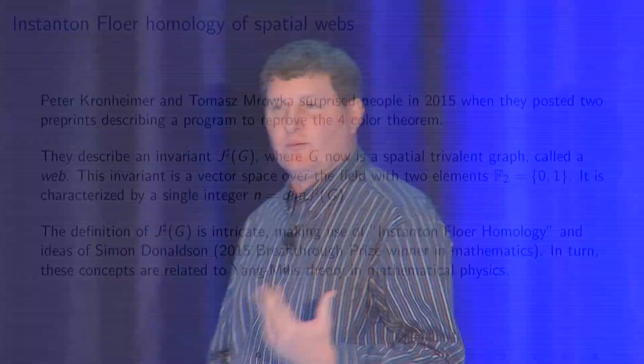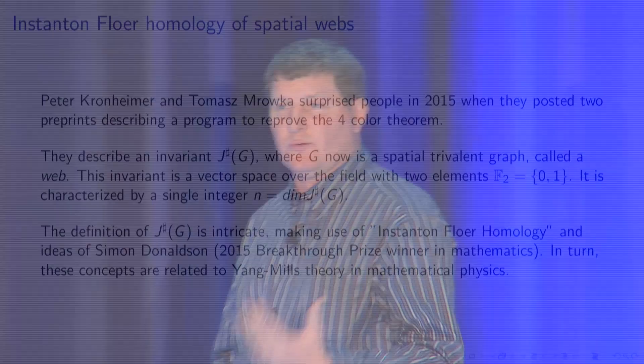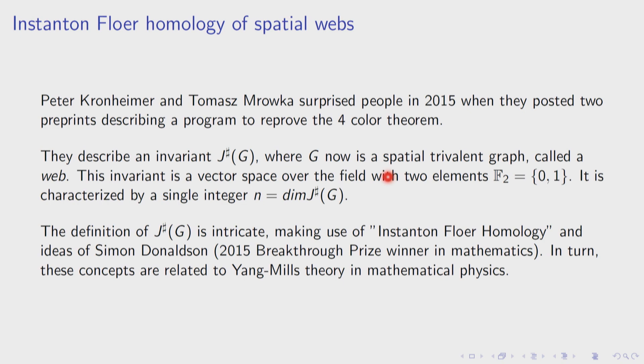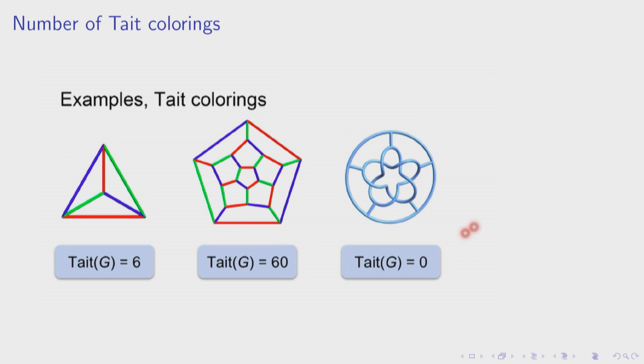In 2015, Peter Kronheimer, a professor at Harvard, and Thomas Mrowka posted two preprints on the archive describing a program to try to reprove the four-color theorem. They described an invariant called J-sharp of G. Here G is a spatial trivalent graph — a graph embedded into space — so it's a topological object, invariant up to deformation.